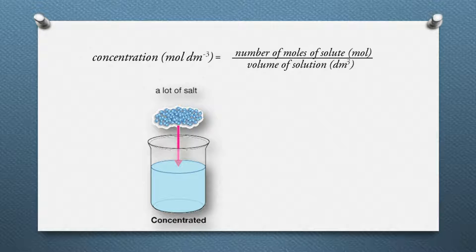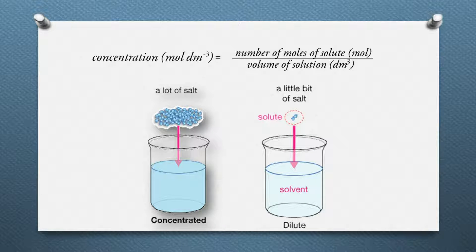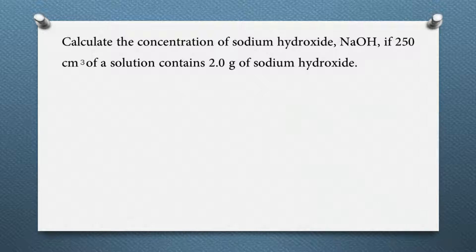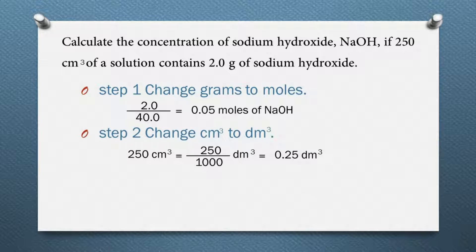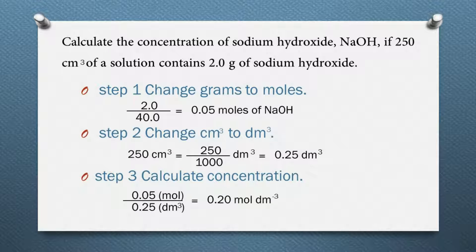A concentrated solution contains a high amount of solute dissolved, and a dilute solution contains a low amount of solute dissolved. For example, we want to calculate the concentration of sodium hydroxide if 250 cm³ of a solution contains 2 grams of sodium hydroxide. We first change grams to moles: divide the mass of NaOH (2 g) by the Mr value (40) to get 0.05 moles. Then change cm³ to dm³ by dividing 250 by 1000, giving 0.25 dm³. Finally, calculate the concentration: 0.05 ÷ 0.25 = 0.2 mol/dm³.